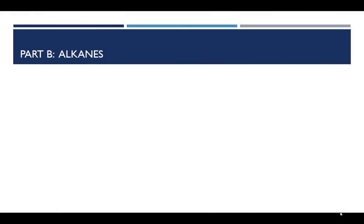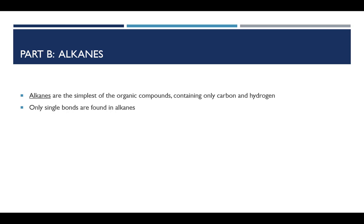In part B of this experiment, we look at alkanes and some related compounds. Amongst all the organic compounds that we will encounter, alkanes are the simplest. They contain only carbon and hydrogen, and the only kinds of bonds we find in alkanes are single bonds. The formula of alkanes is CnH2n+2,